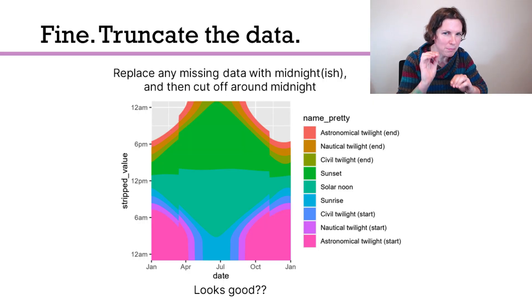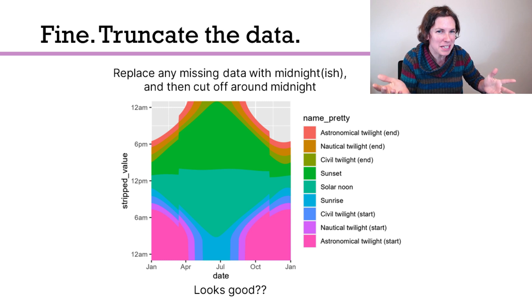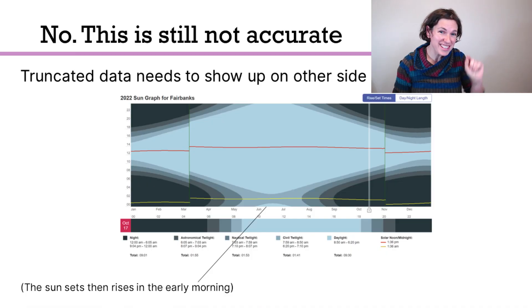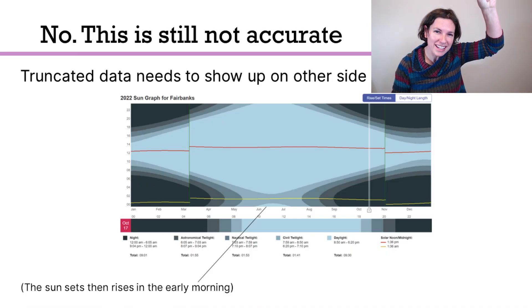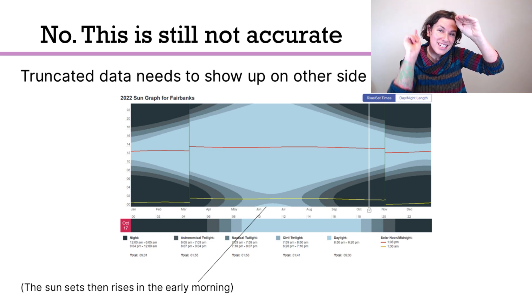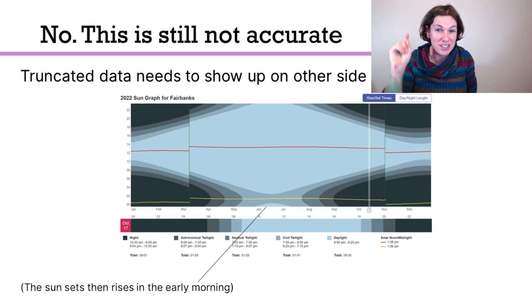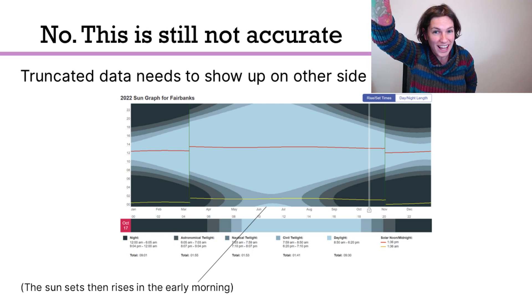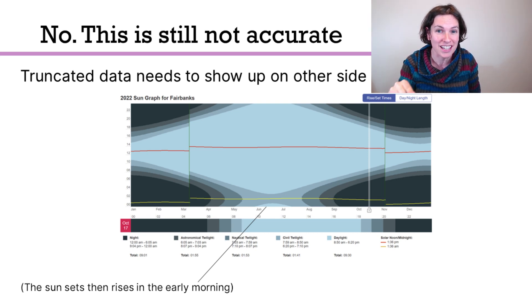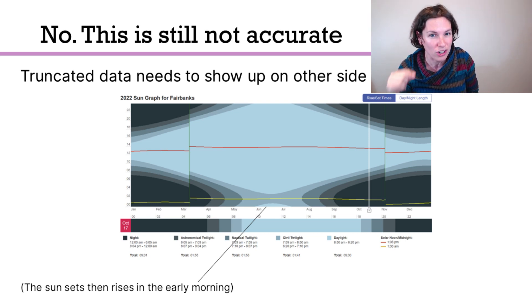But if I were to crop the chart at midnight at the top and the bottom, that seems like it should just kind of hide this problem. It looks right, but it's still wrong. Because if events happen really late at night in Alaska such that they get cut off at the top of the chart, that means they need to technically wrap around and show up at the bottom of the chart. So if the sun sets super late at night, that means it sets early in the morning — and in fact, that does happen in Alaska. The sun sets super early in the morning.